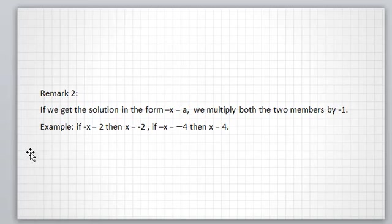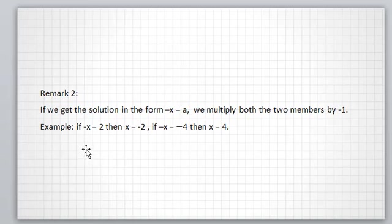Remark 2: If we get the solution in the form minus x equal to a, then we multiply both members by minus 1. Example: if we get minus x equal to 2, then x equal to minus 2, because minus x times minus 1 equals 2 times minus 1, giving x equal to minus 2.